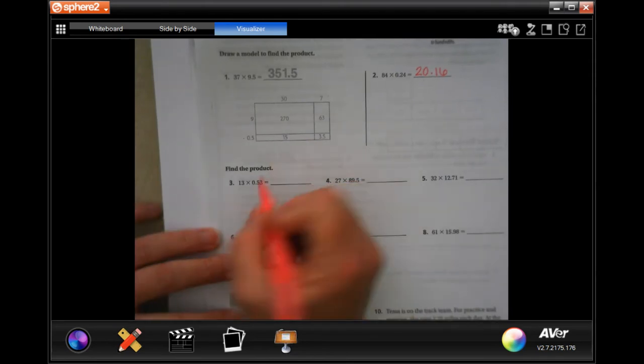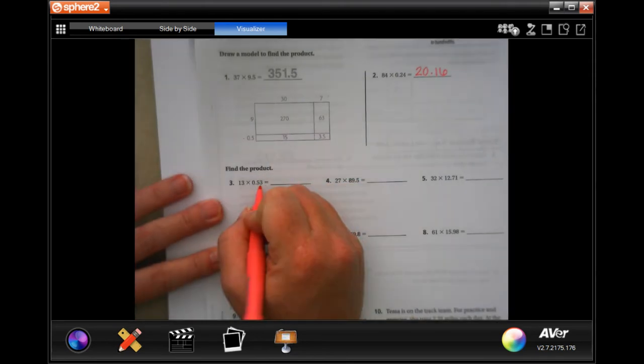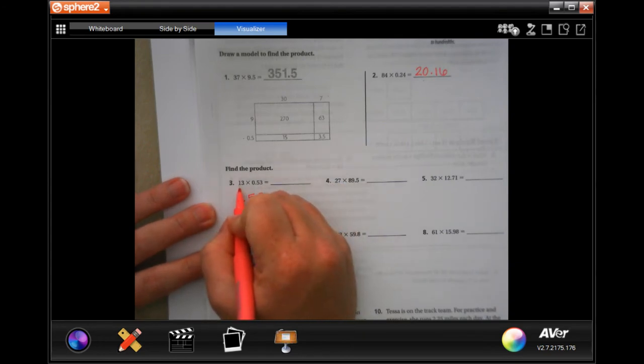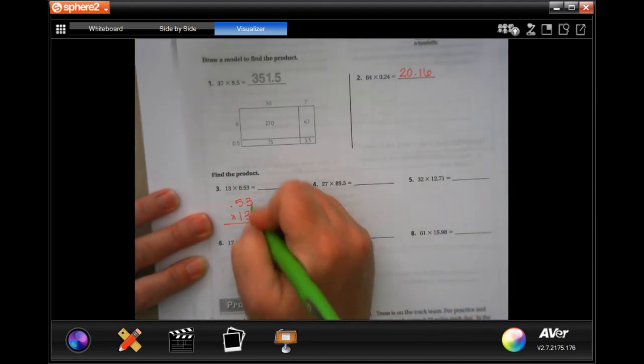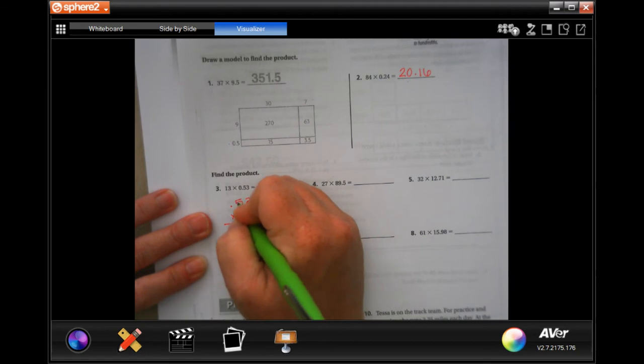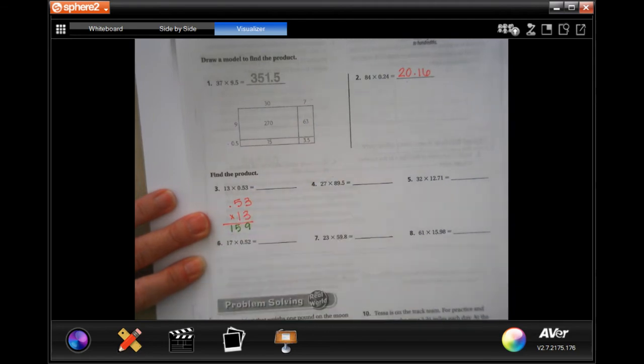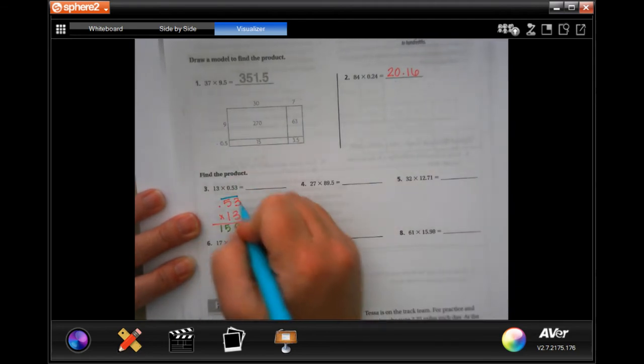So I'm going to go ahead and I'm going to put, I'm going to put the 0.53 on top because then I get to multiply by 1 the second time and that makes it a lot easier on me. So 3 times 3 is 9. 3 times 5 is 15. I don't have any ticks, but that's okay. I can do that, tack, and toe.